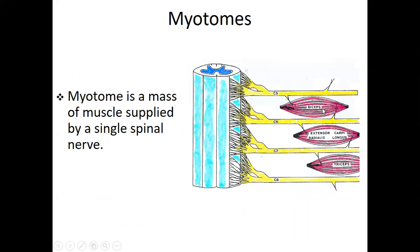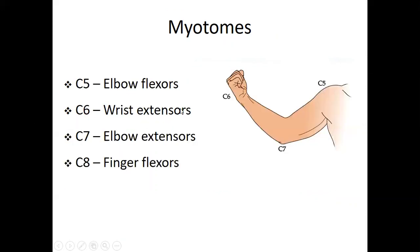Now we move to discuss the myotome, the second component. A myotome is a mass of muscle supplied by a single spinal nerve. For example, C5 is for the elbow flexor. C6 is the wrist extensor. C7 is the elbow extensor.